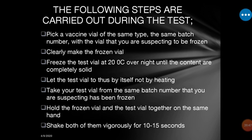Step three: freeze the test vial — the one marked B — at minus 20 degrees Celsius overnight until the contents are completely solid. Allow the vaccine to freeze over a period of at least 7 to 8 hours overnight until it becomes completely frozen.